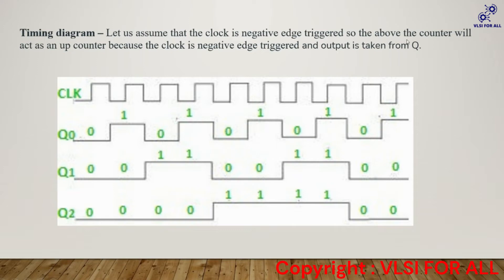For the timing diagram, let us assume the clock is negative-edge triggered. The counter will act as an up counter because the clock is negative-edge triggered and the output is taken from Q. Whether the counter counts up or down depends on the type of triggering and the output taken. For negative-edge triggering: output from Q gives an up counting sequence; output from complement of Q gives a down counting sequence. For positive-edge triggering: output from Q gives a down counting sequence; output from complement of Q gives an up counting sequence.